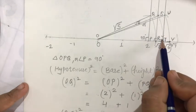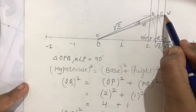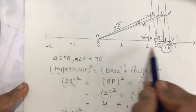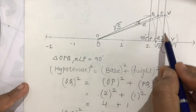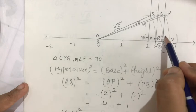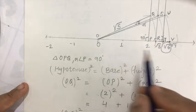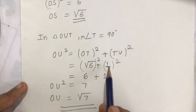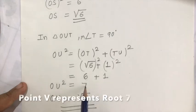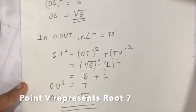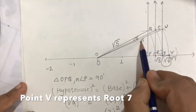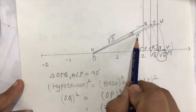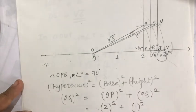Once again: in right angle triangle OTU, OU is the hypotenuse, OT is the base, and TU is the height. OT is root 6, so root 6 squared, plus TU is 1 unit distance, so 1 squared — that is 6 plus 1, which is 7. So OU squared equals 7, that is why OU equals root 7. Today we have learned how to construct root 5, root 6, and root 7 on a number line. Thank you, happy learning.